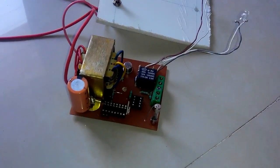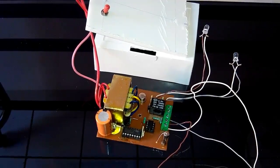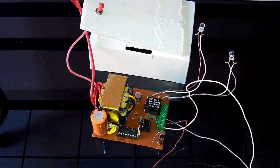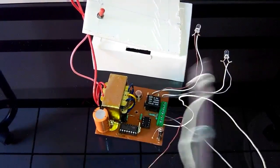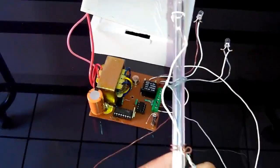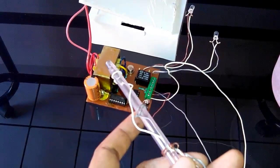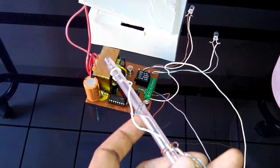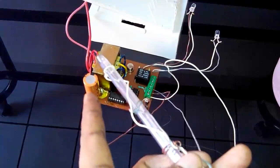Let's check how it works. The automatic water pump controller is ready. It has three sensors connected - this is for the top level, this is for the middle level where the pump is to be started, and this is the bottom level.